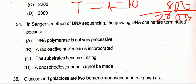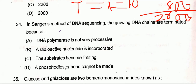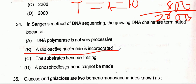Question thirty-four: regarding DNA sequencing by Sanger's method. In Sanger's method of DNA sequencing, the growing DNA chains are terminated because radioactive nucleotides are incorporated into the DNA, so option B will be the correct one.